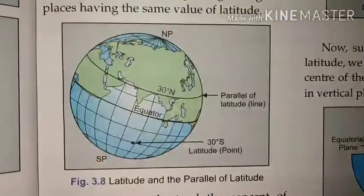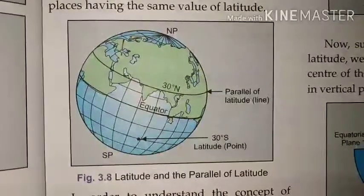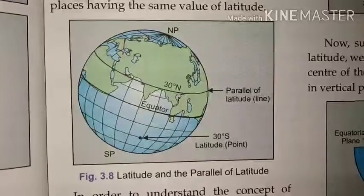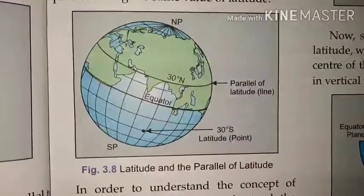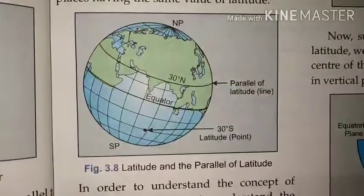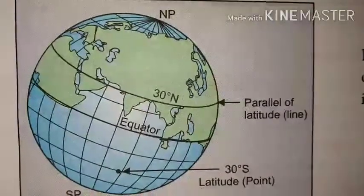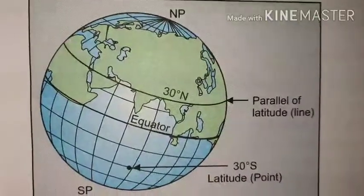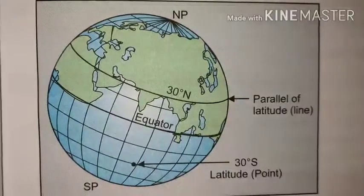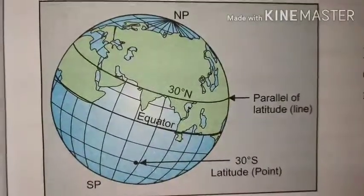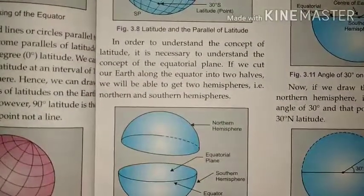You can see here 30 degrees north as a parallel of latitude — a line — and 30 degrees south as a latitude point shown with a black dot. The 30 degree north line passes through all places that have a latitude of 30 degrees north. In order to understand the concept of latitude, it is necessary to understand the concept of the equatorial plane.